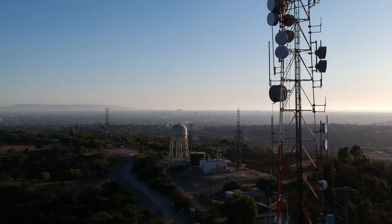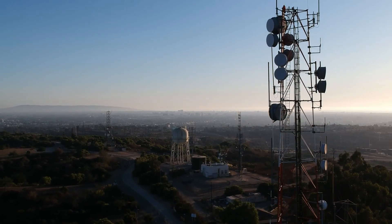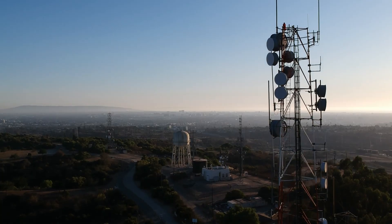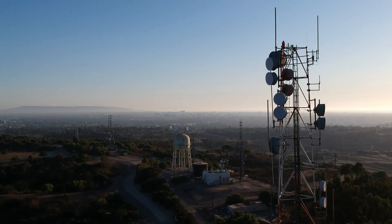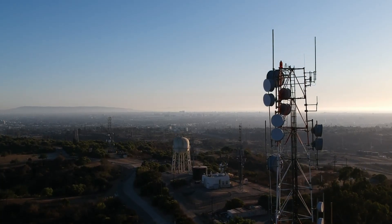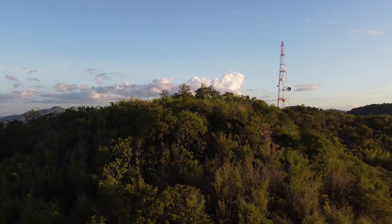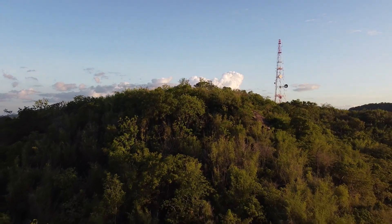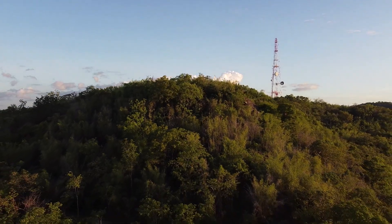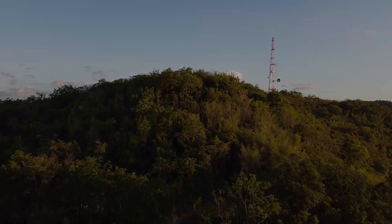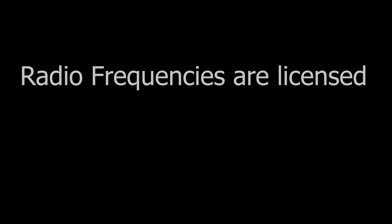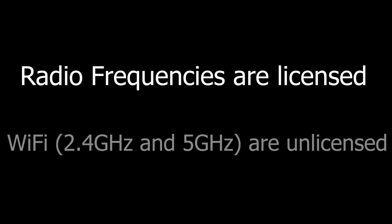The use of radio waves is regulated by most governments, meaning you usually need a special license to use certain frequencies, also known as bands. This is to prevent one radio system from interfering with another, which is especially important for things like emergency services. Common Wi-Fi uses the 2.4GHz and 5GHz bands, which in most, perhaps all countries, are unlicensed bands — meaning anyone is allowed to use them without needing a special license.